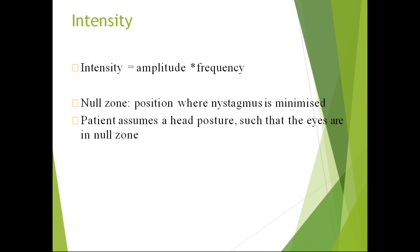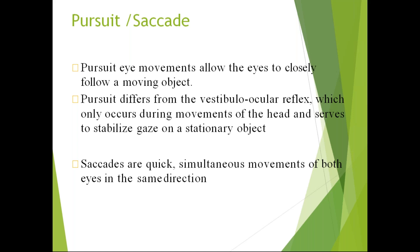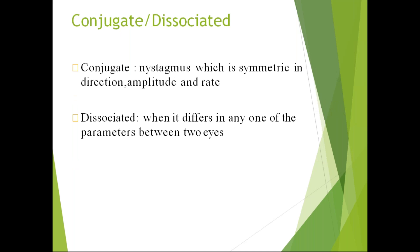Pursuit eye movements allow the eyes to closely follow a moving object. This differs from the vestibulo-ocular reflex, which occurs only during head movement and serves to stabilize gaze on a stationary object. Saccades are quick, simultaneous movements of both eyes in the same direction. Pursuits involve closely following a moving object.